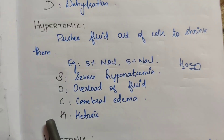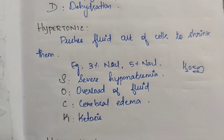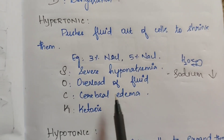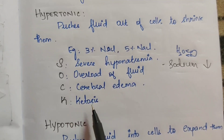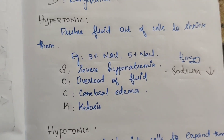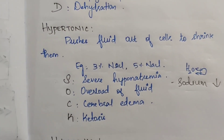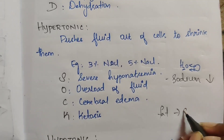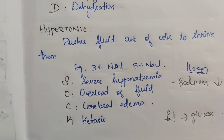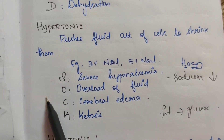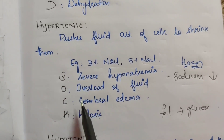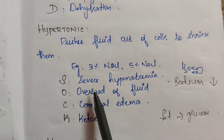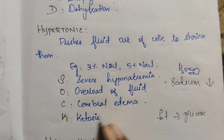The indications for hypertonic solution include severe hyponatremia — where sodium level is very low — fluid overload, cerebral edema, and ketosis. In cases of fluid overload, the cells lose fluid and shrink.